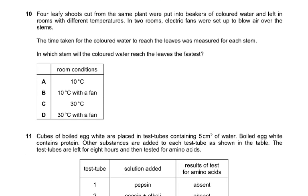Question 10: four leafy shoots are placed in beakers of colored water in rooms at different temperatures, with electric fans blowing air over two of them. The time for colored water to reach the leaves is measured. Transpiration involves evaporation and diffusion, so higher temperature increases the rate. With a fan and 30°C, the water vapor is removed, maintaining the diffusion gradient, so transpiration is fastest. The answer is D.